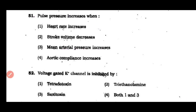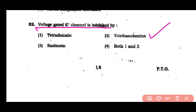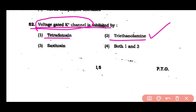Question number 52: Voltage-gated potassium channel is inhibited by tetrodotoxin, triethanolamine, saxitoxin, or both 1 and 3. The correct answer is option 2 — the voltage-gated potassium channel is inhibited by triethanolamine, while tetrodotoxin and saxitoxin block the sodium channel.